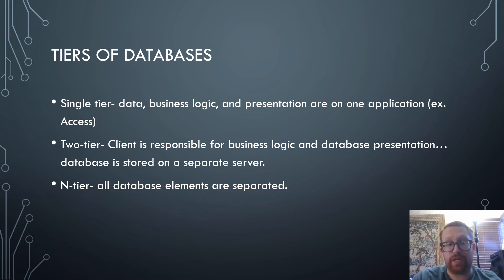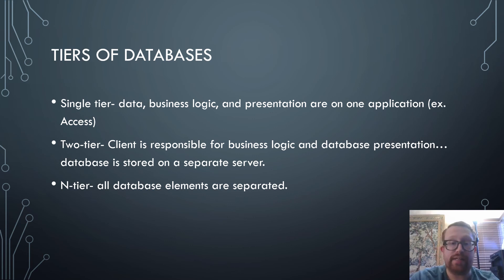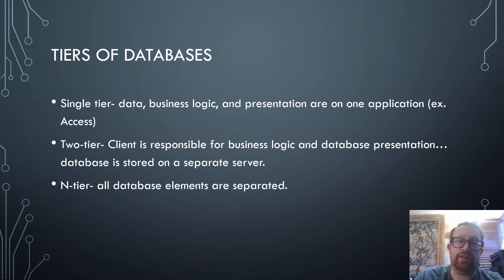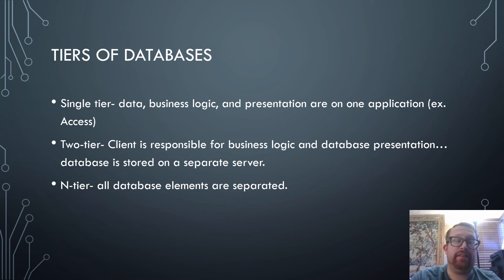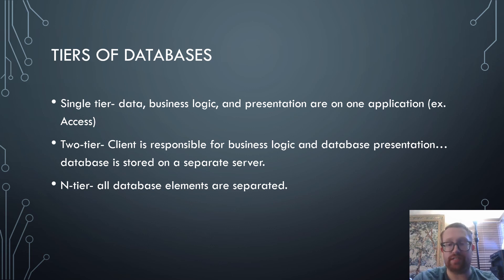In a two-tier database, the client is responsible for the business logic and the presentation, but the database is stored on a separate server. So one computer holds the business logic and presentation, and another server elsewhere holds all the database files — this is quite useful especially for very large databases. The last tier is the n-tier, where all database elements are separated: your data is on a separate server, your business logic is on a separate server, and your presentation is on a separate server. Each of these tiers has its own advantages and disadvantages.